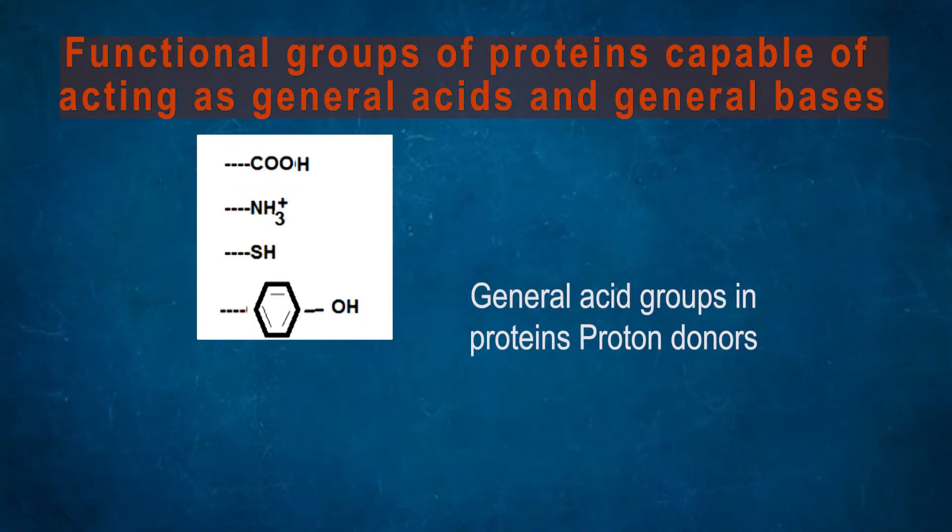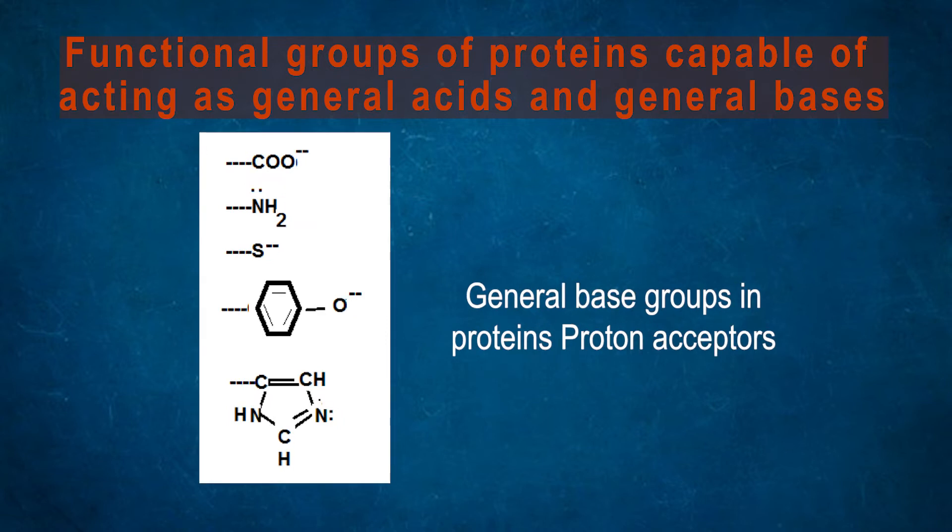Functional groups of proteins capable of acting as general acids and bases: General acid groups in proteins are proton donors like COOH, NH3+, tyrosine hydroxyl, imidazolium positive. General base groups in proteins are proton acceptors like COO-, NH2 with lone pairs, O- in tyrosine residue, and the lone pair of the imidazolium ring.